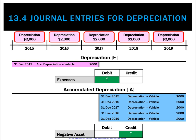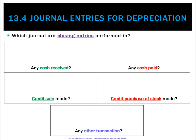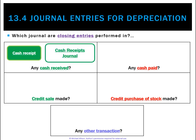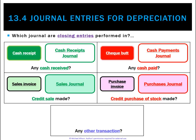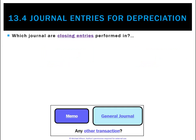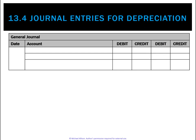Which journal do we use? It won't be the cash receipts journal since no cash is received, and not the payments journal since no cash is paid. There's no credit sale or credit purchase of stock, so we use our miscellaneous journal — the general journal — and we need to use a memo to record it.